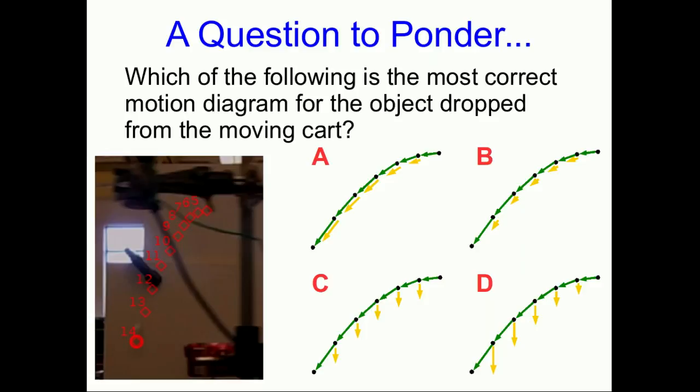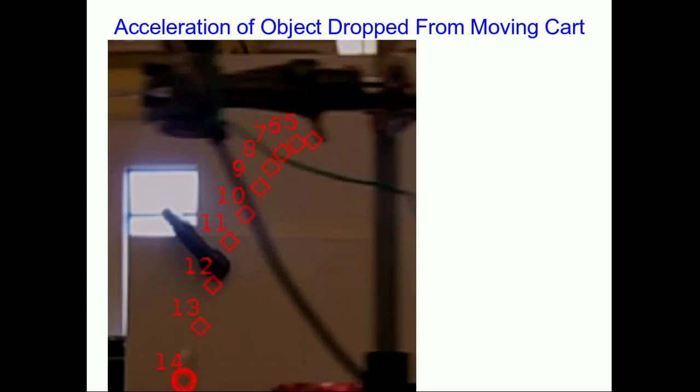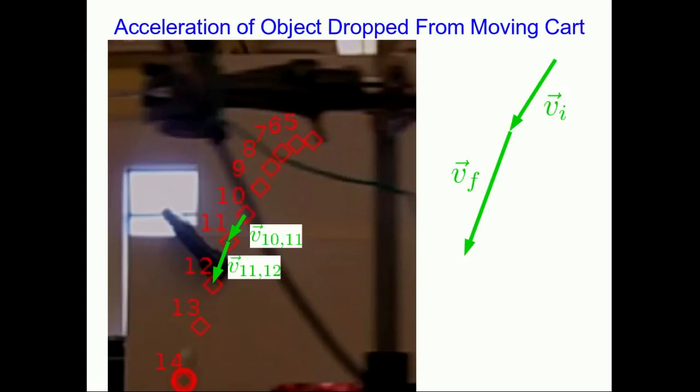What we're going to do is answer this question by directly analyzing the velocity vectors straight from the data. Here is the video analysis of the trajectory of the falling object, blown up nice and big so you can see what's going on. I'm going to use the velocity from 10 to 11 and the average velocity from 11 to 12 to estimate the direction of the acceleration at time 11. Here are those vectors scaled up so you can see the vector subtraction in detail.